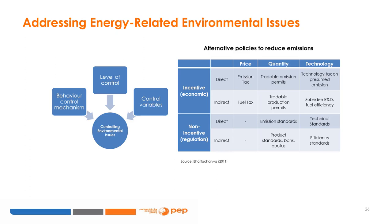There are three key categories of instruments available to control environmental issues: 1. Behavior control mechanisms, which rely on regulation or incentives. 2. Levels of control, whether the instrument directly or indirectly influences emissions. 3. Control variables, where three important parameters are price, quantity, and technology. Quantity-based policies fix the level of environmental damage but allow prices to change. Price-based policies fix the cost of controlling environmental damage but allow the pollution level to change in response to economic conditions. Technical solutions focus on technology-driven fixes to generate an acceptable level of damage.